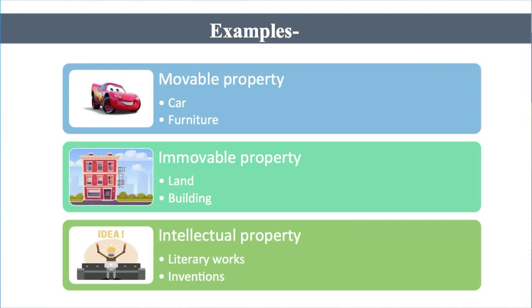For examples: movable property includes a car and furniture which we can move around in our house. Immovable property includes our land, our house, buildings, factories, etc., which cannot be moved. Then finally, what is intellectual property? Intellectual property is something that is created by intellectuals — that is why it is called intellectual property. This refers to literary works and inventions also.